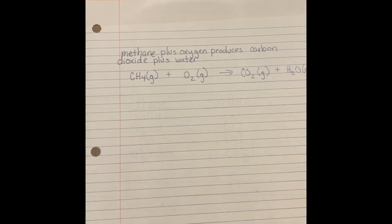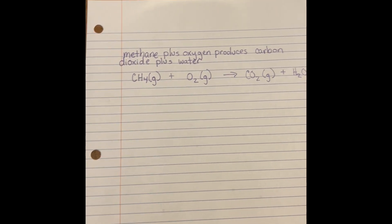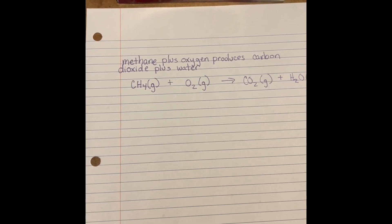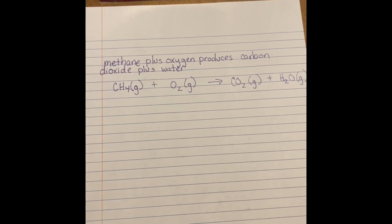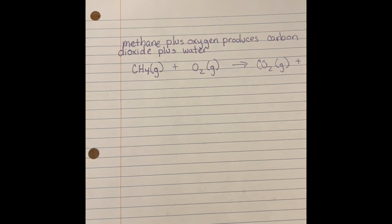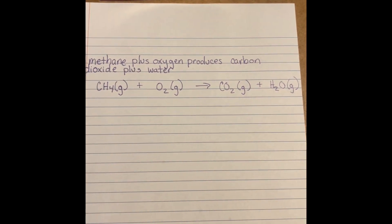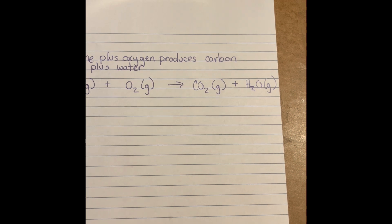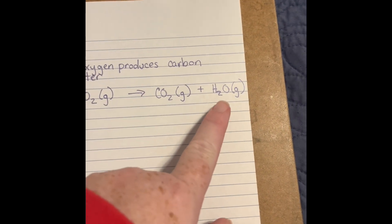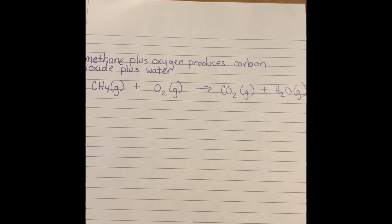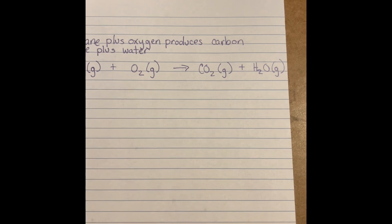Let's move on to another example. Methane plus oxygen produces carbon dioxide plus water. You need to know that oxygen and carbon dioxide both exist as gases in nature. Methane is a main component of natural gas. This reaction also produces lots of energy. You're probably wondering why the water is gas here — well, the energy makes the surroundings really, really hot, and that's why water is in the gas phase in this reaction.